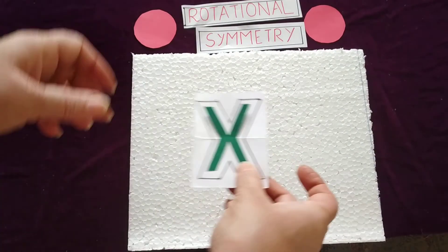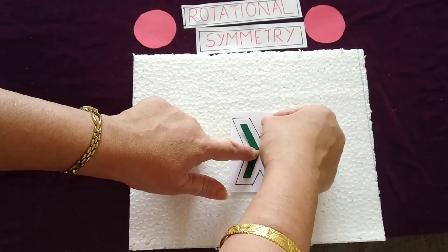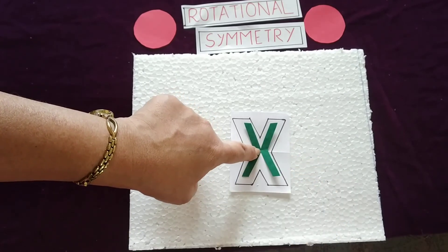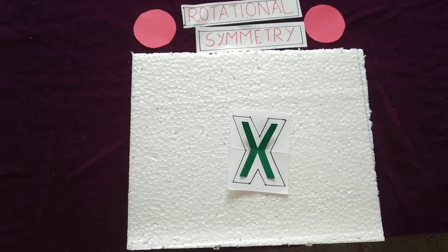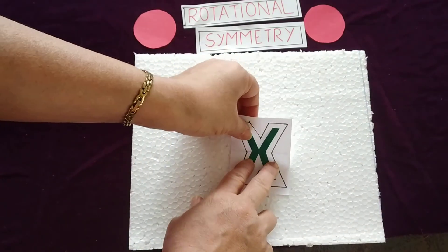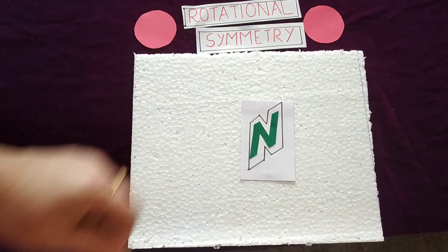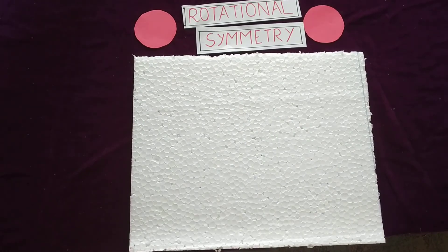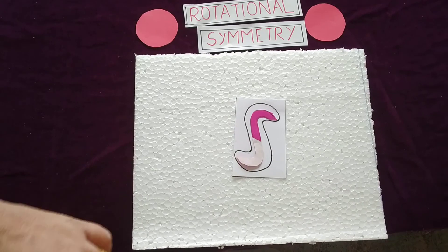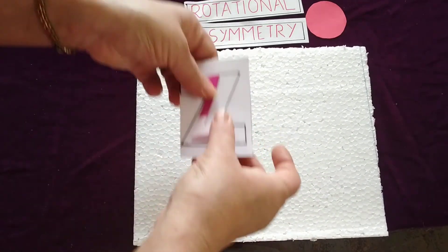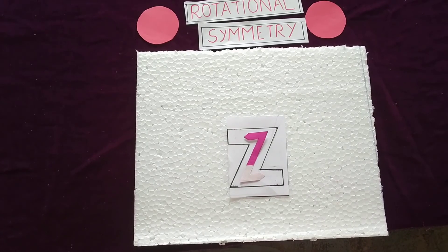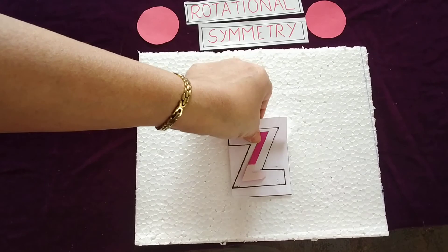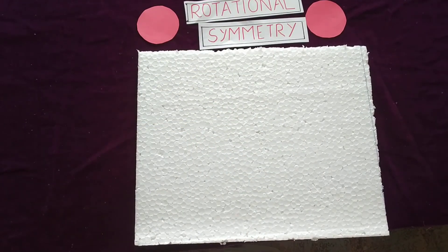Same way, you can find rotational symmetry for letters also. For example, the letter X — rotate it once, you get X again; rotate again, you get X. So for X, the order of rotation is 2 and the angle of rotation is 180 degrees. This is also your homework — find the order of rotation for other letters the same way we did for geometrical figures. Cut all the symmetrical letters and find out their order of rotation and angle of rotation. Thank you for watching today's video.